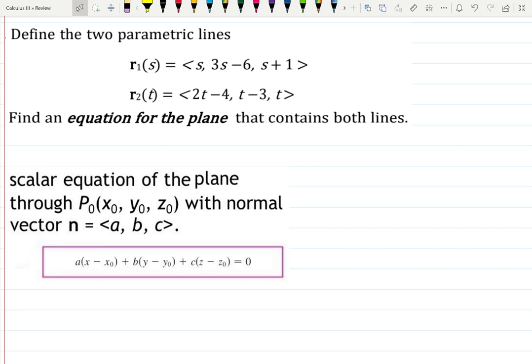Let's see this problem. Define the two parametric lines as r₁(s) = ⟨s, 3s-6, s+1⟩ and r₂(t) = ⟨2t-4, t-3, t⟩. Find the equation of the plane that contains both lines.